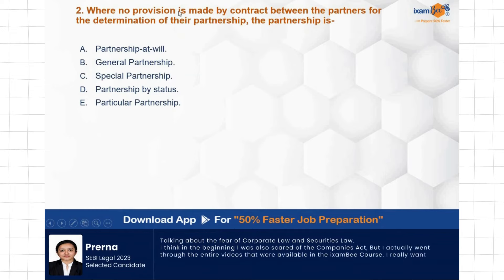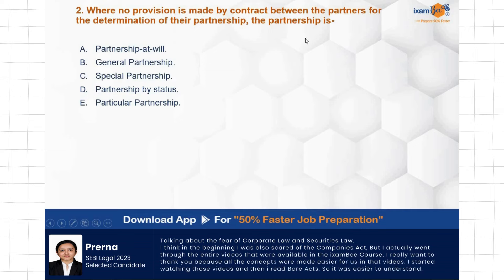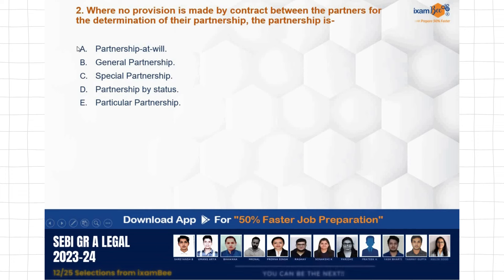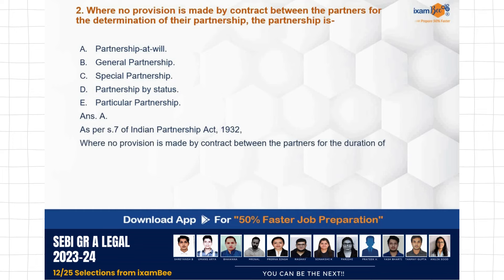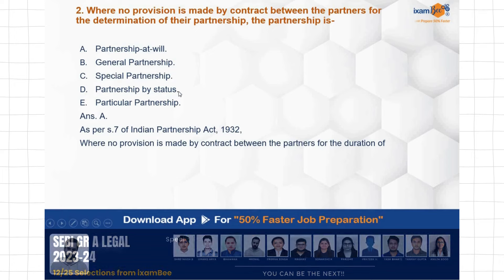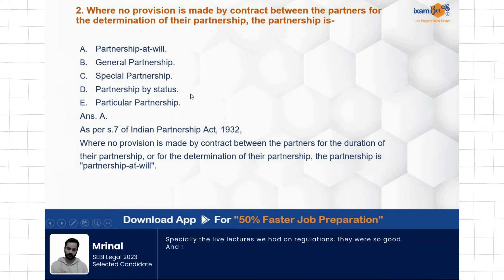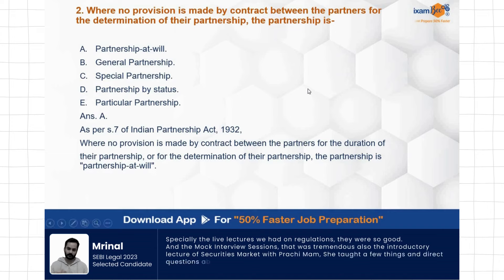When no provision is made by contract between the partners for the determination of their partnership, that kind of partnership is called: partnership at will, general partnership, special, partnership by status, or particular partnership. The correct answer is partnership at will. As per Section 7 of the Indian Partnership Act, partnership at will has no predetermined period. Whenever partners want to dissolve it, they give notice and dissolve it at their will.